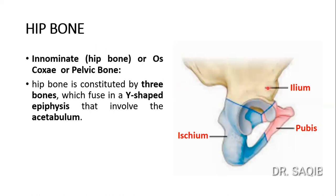This is the hip bone — you see this is ilium, this is pubis, and this is the ischium. This is the innominate hip bone, another name is the os coxae or the pelvic bone. The bone is constituted by three bones, and these three bones fuse in a Y-shaped epiphysis that involves the acetabulum. This is the Y-shaped epiphysis with its limbs.